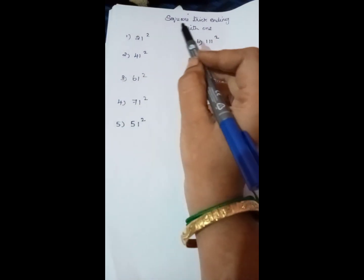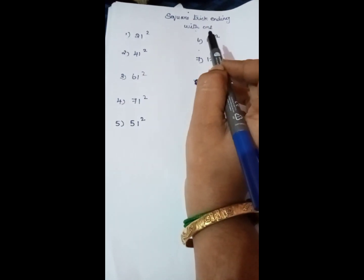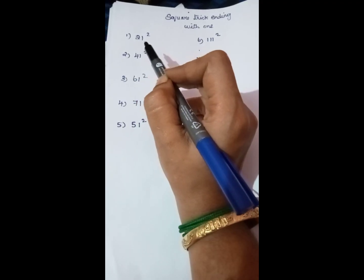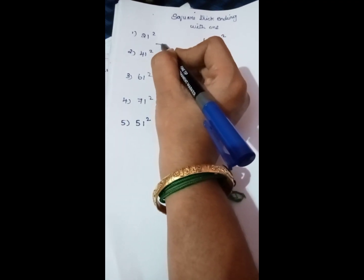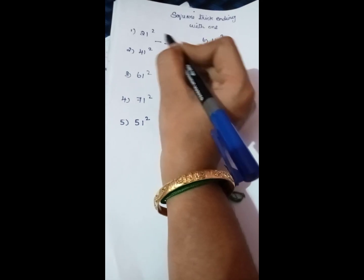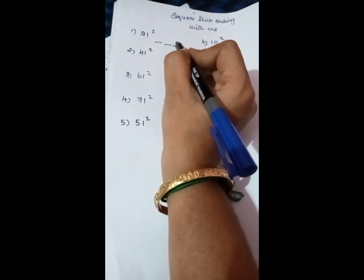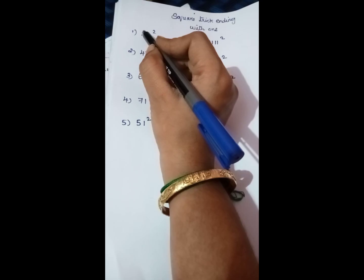Welcome to Easy Learning YouTube channel kids. Today's topic is square trick ending with 1. So 21 square - first number, take the 3 dashes. So 1 square for 1 number, write 1 as it is, and next number double it, double the 2 to get 4.